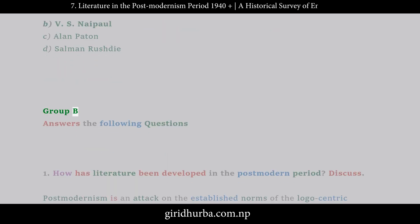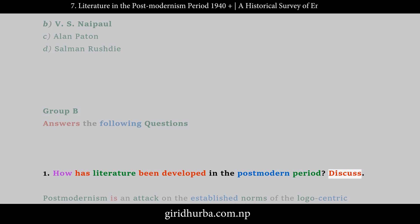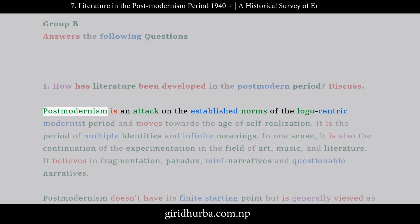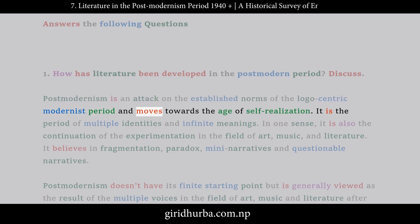Group B: Answer the following questions. Question 1: How has literature been developed in the postmodern period? Discuss. Postmodernism is an attack on the established norms of the logocentric modernist period and moves towards the age of self-realization. It is the period of multiple identities and infinite meanings.